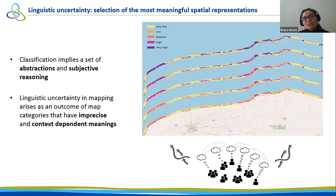Every collaborative process involves some kind of linguistic uncertainty, in particular in the selection of the most meaningful spatial representations. In the case of classification, it implies a set of abstractions and subjective reasoning because we have different classification schemes and codes. So it's important to consider the imprecise and context-dependent meanings that arise from all the participants.